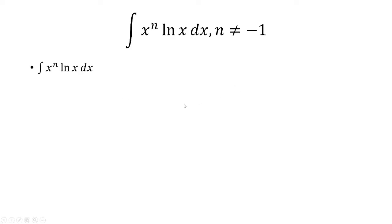Let's use integration by parts. We'll let u equal ln(x), and dv equal x^n dx. The derivative of ln(x) is 1/x. The antiderivative of x^n is x^(n+1) over (n+1).